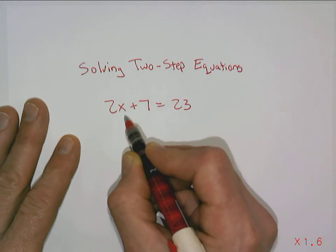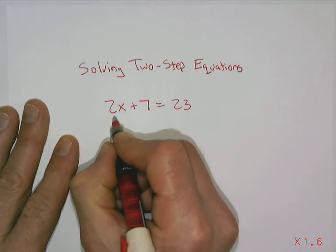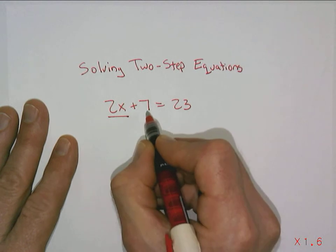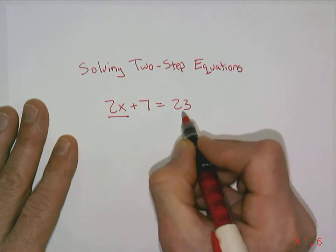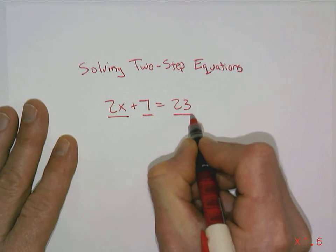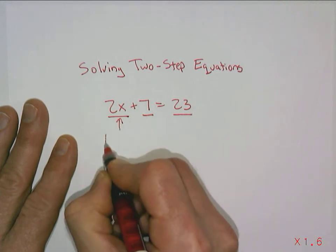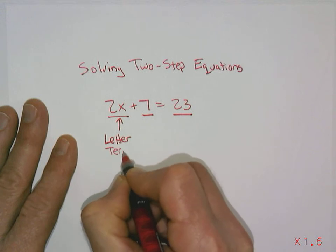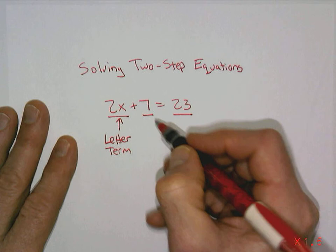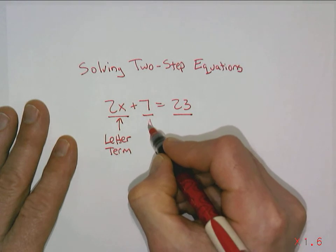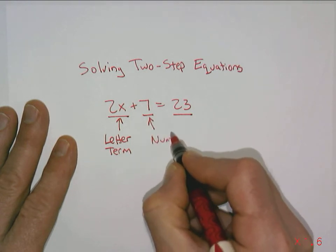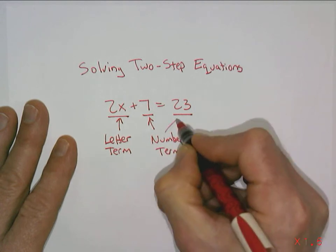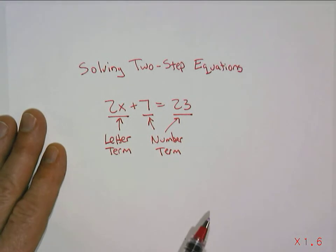So what we need to do first off is define some terms. This first term, the 2x, the 7, and the 23. So we have three terms. This first term is what's called a letter term because it has a letter in it. It has the variable x as a part of it and so we call it a letter term. And this one, the 7, is a number term, and so is the 23. So we have two number terms and one letter term in this equation.